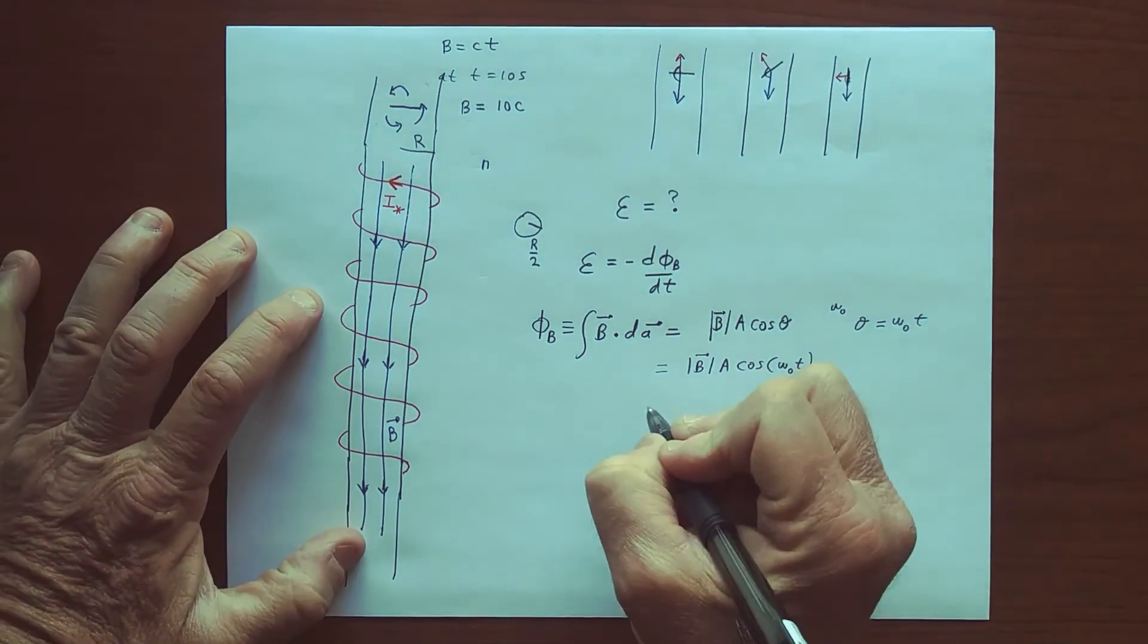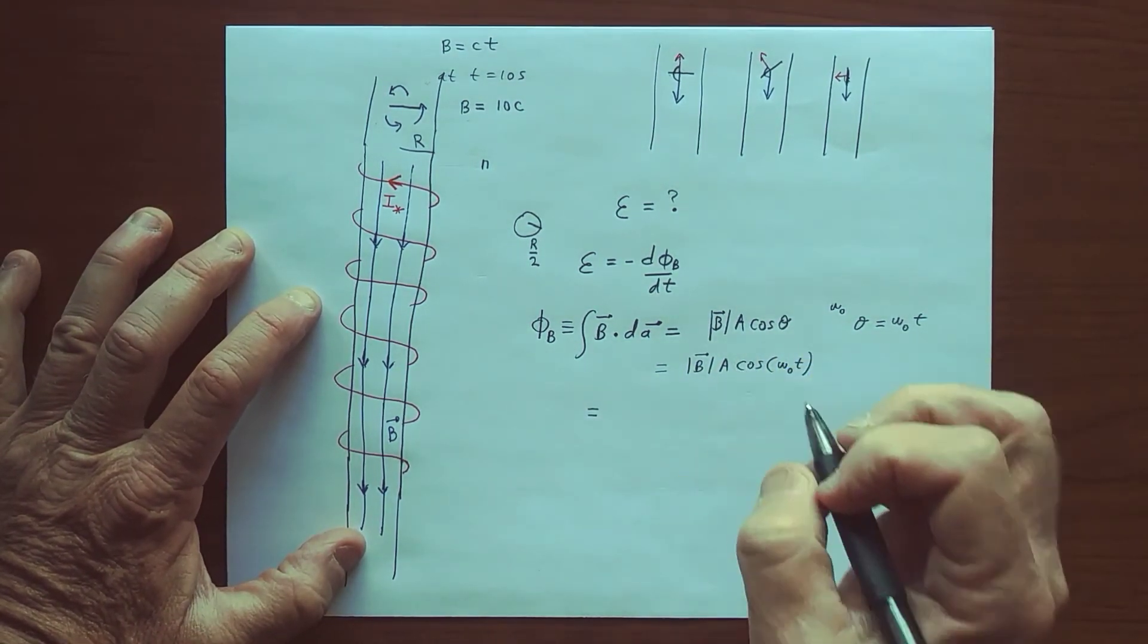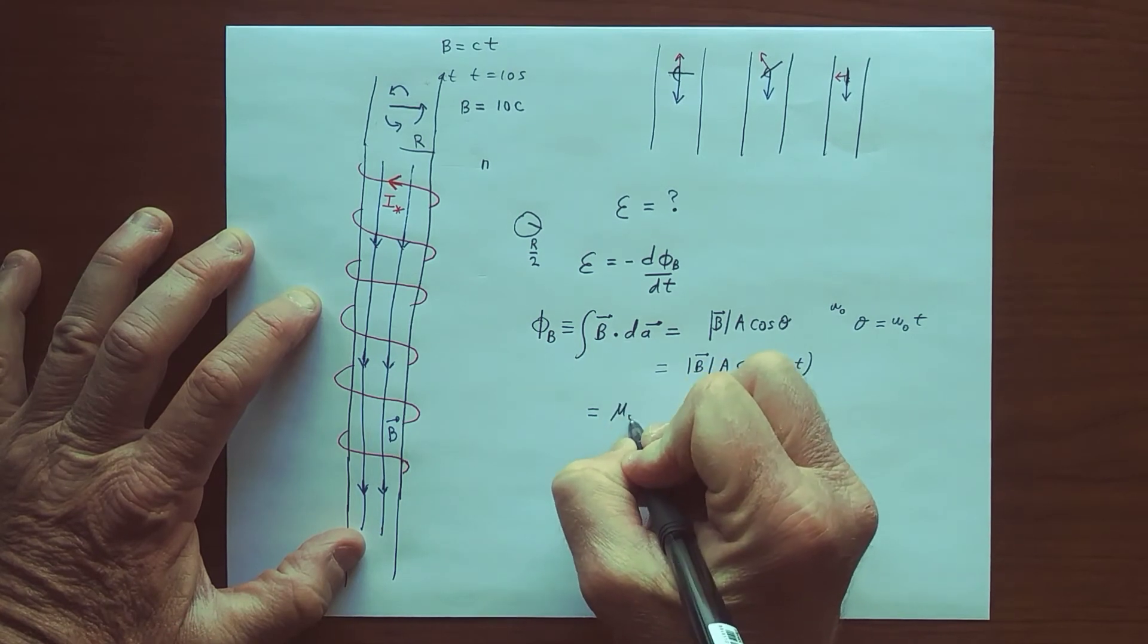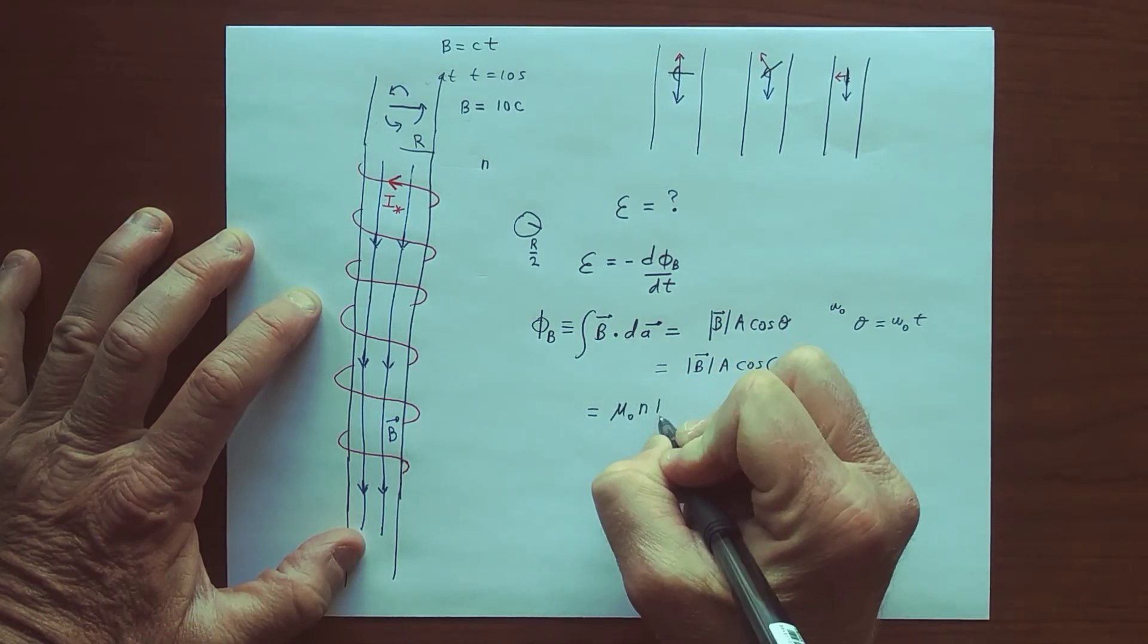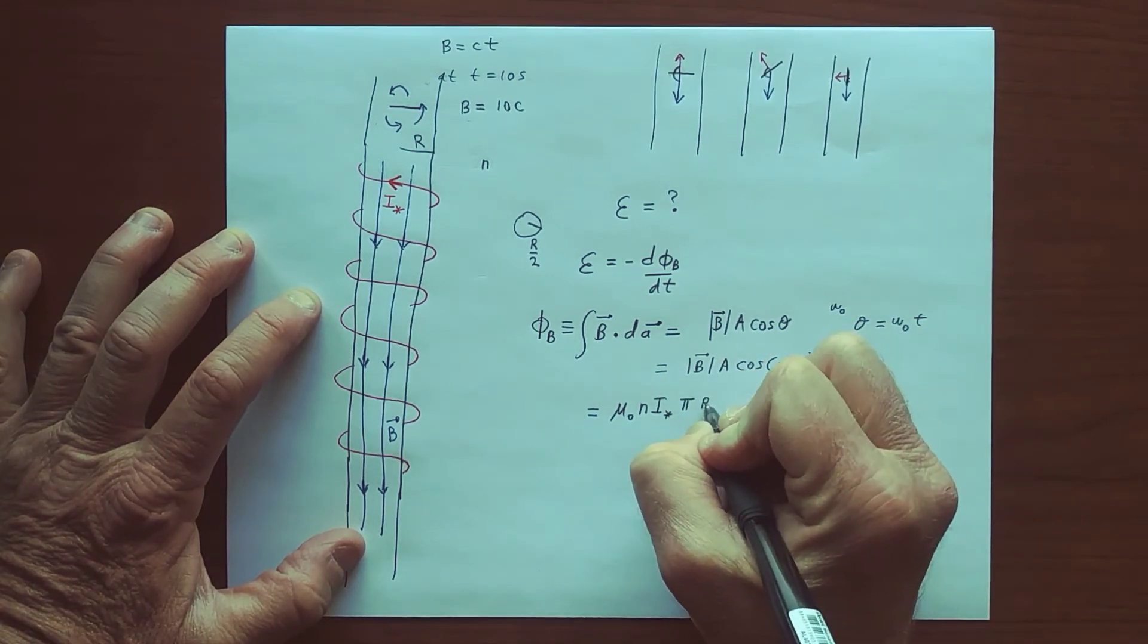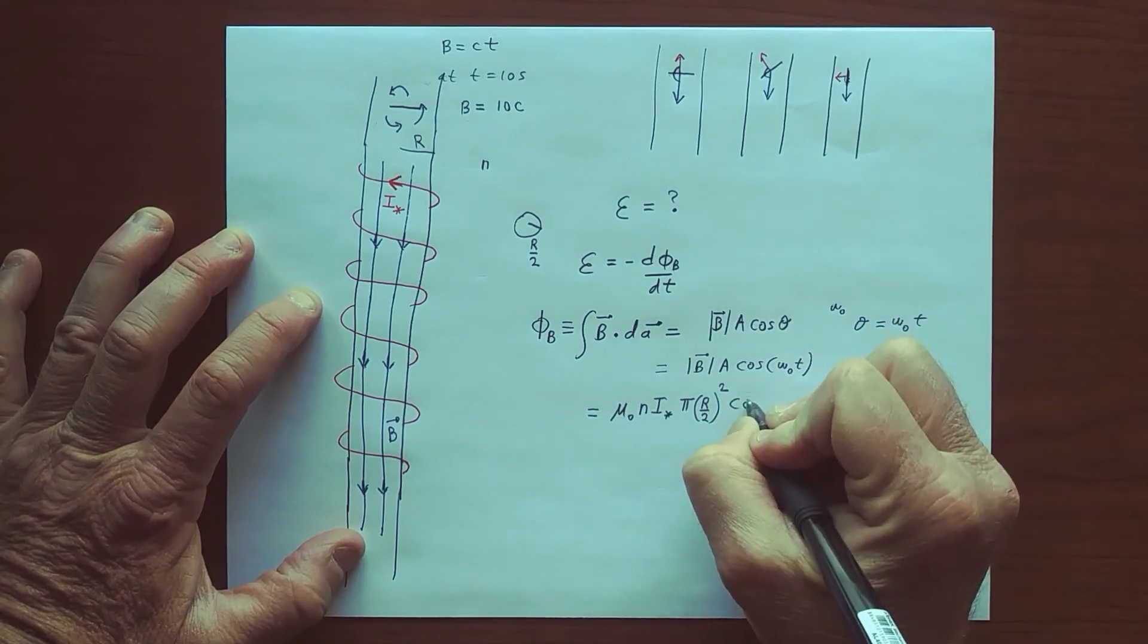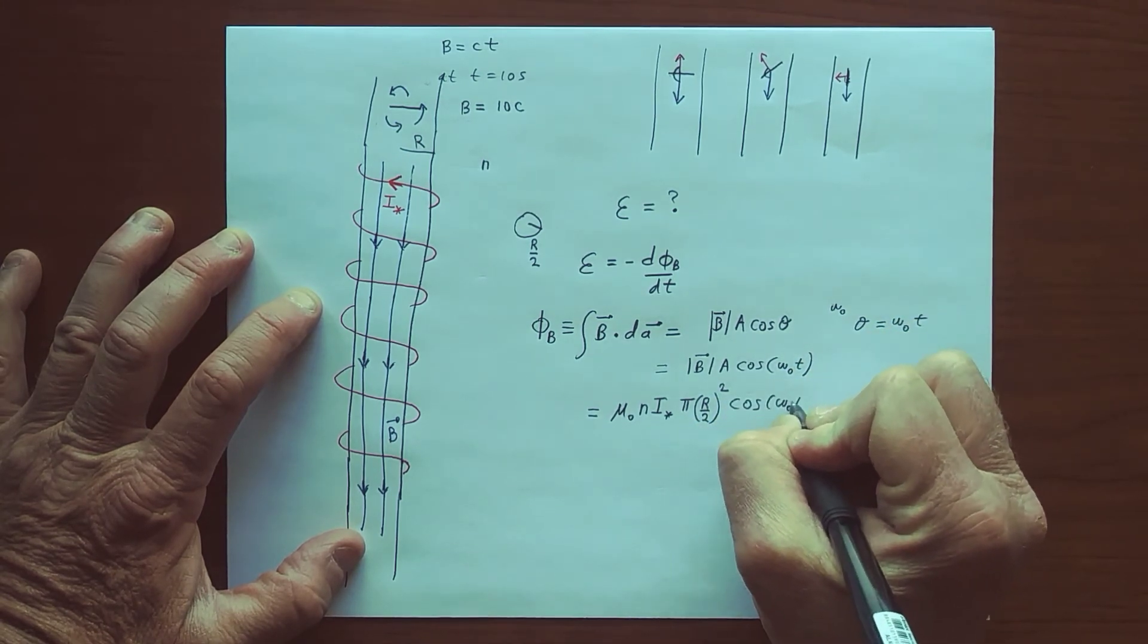So the flux is therefore, what's the magnitude of the magnetic field? Well, we know it's mu naught times n times the current, which is i star. The area is pi times r over two squared, times the cosine of omega naught t. And that's the flux.